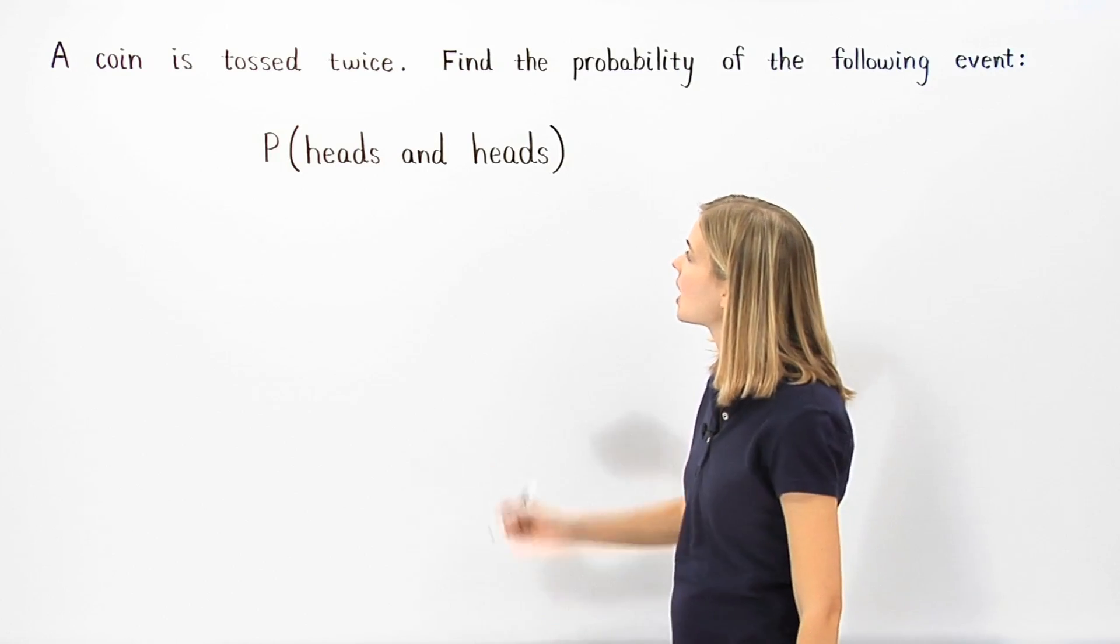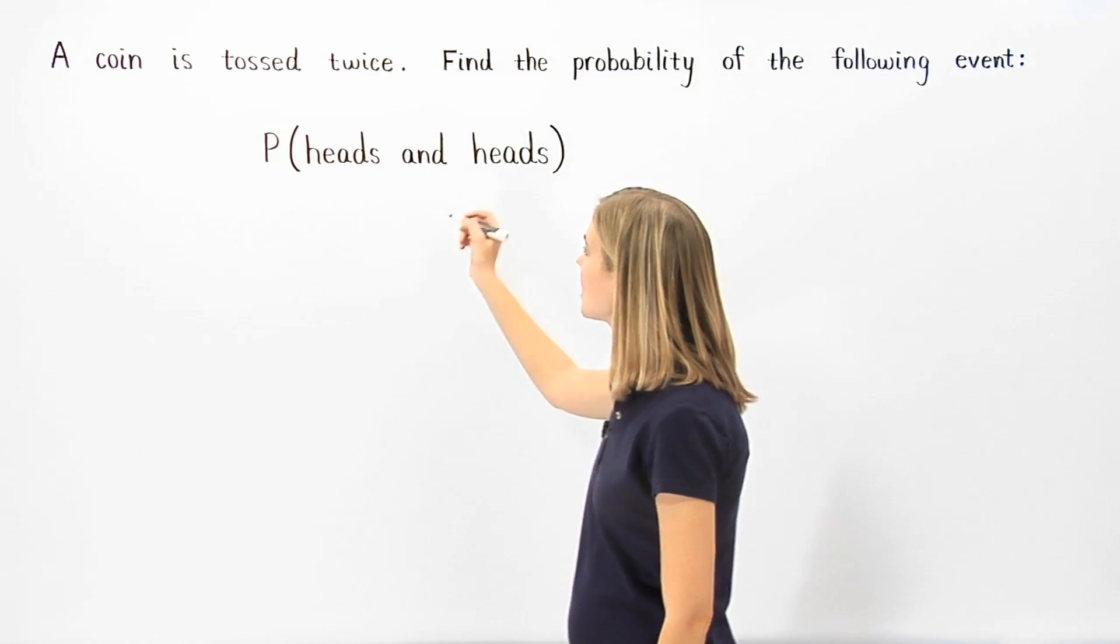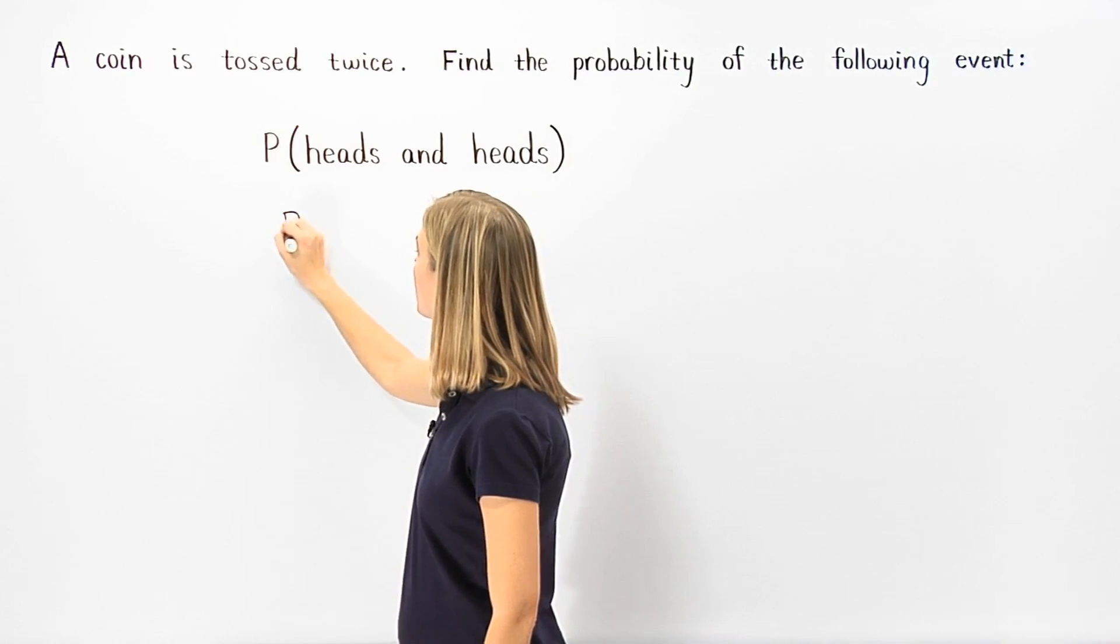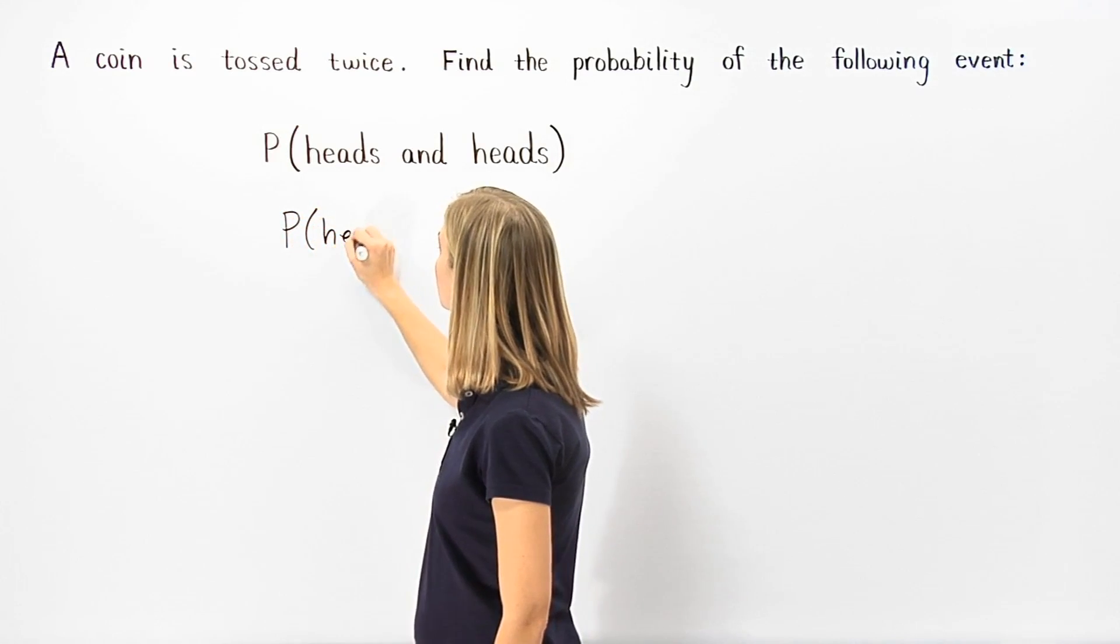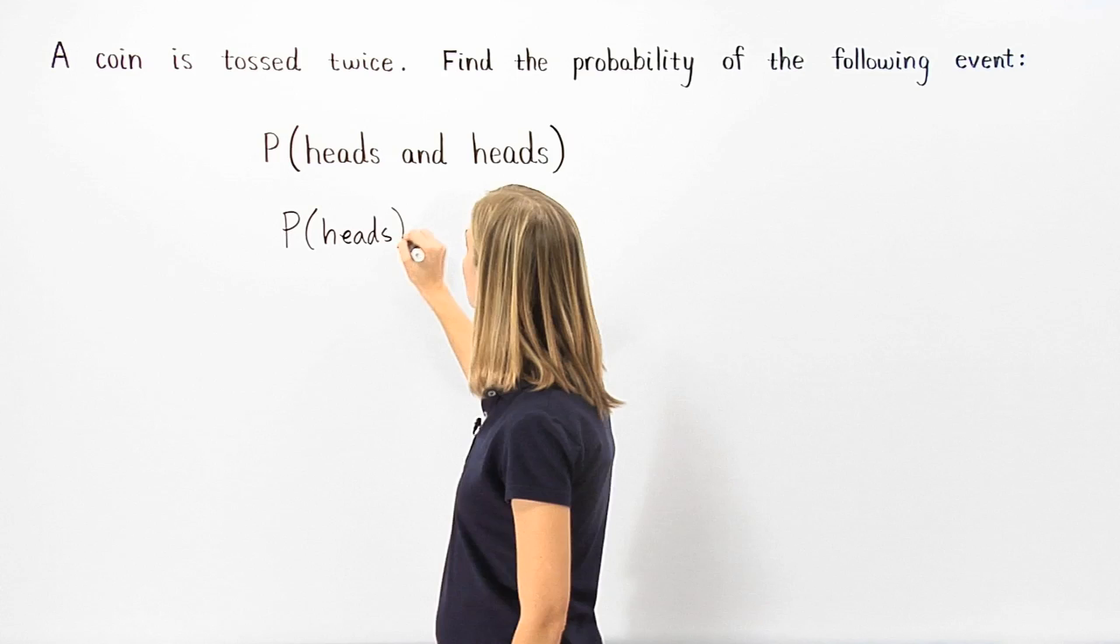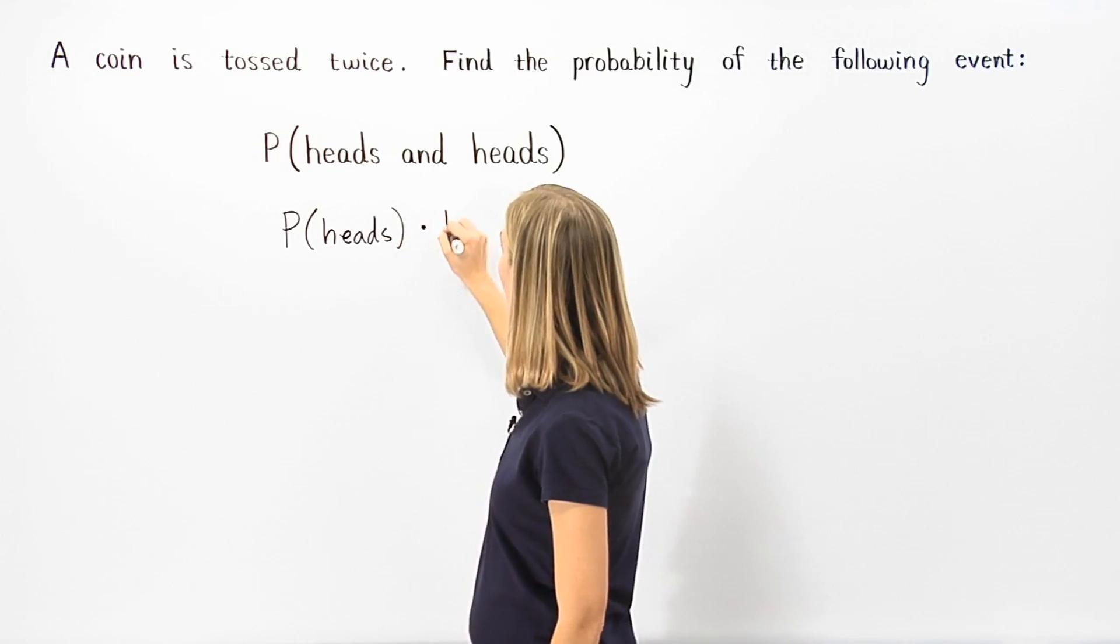So in this problem, P(heads and heads) means the same thing as P(heads) times P(heads).